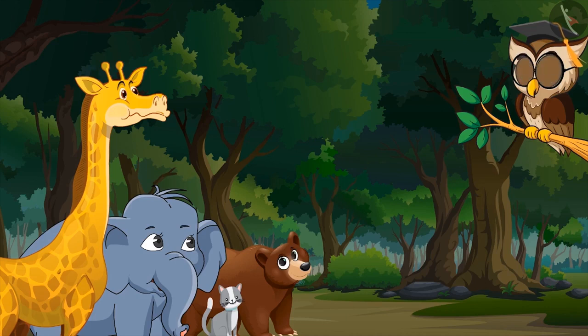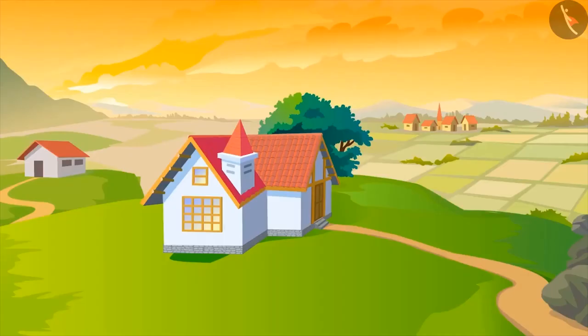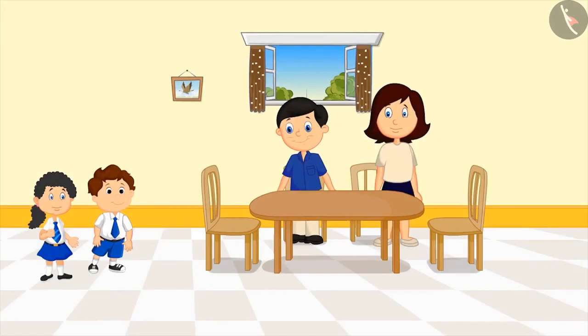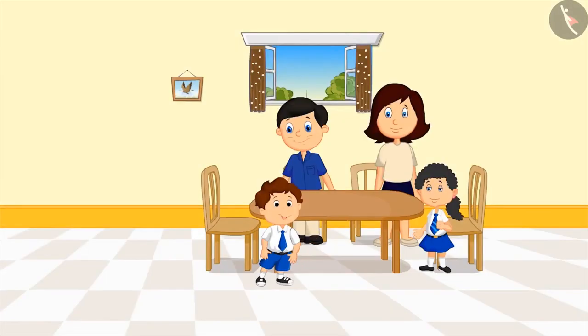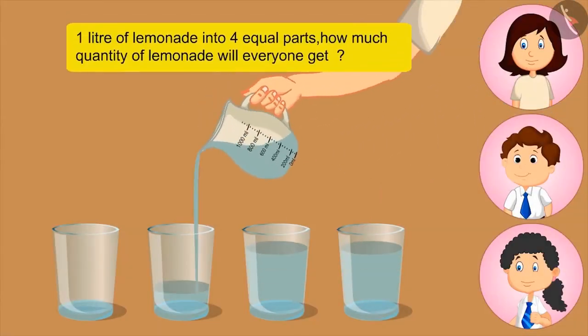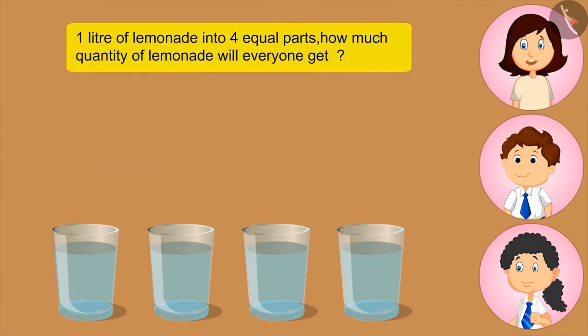Okay, I will recite a story to all of you. Pinky and Bholu live in the village with their parents. Pinky and Bholu got very thirsty while returning from school. Mom, I am very thirsty. Okay, I will make lemonade for everyone. We will also help you in making lemonade. Mother makes one litre of lemonade with the help of Bholu and Pinky and fills it in four glasses. Now tell me, if I divide one litre of lemonade into four equal parts, how much lemonade will everyone get?